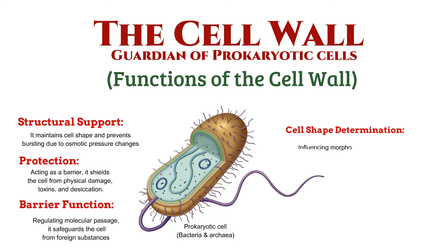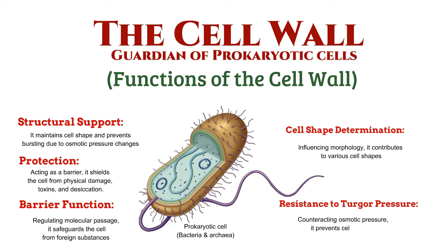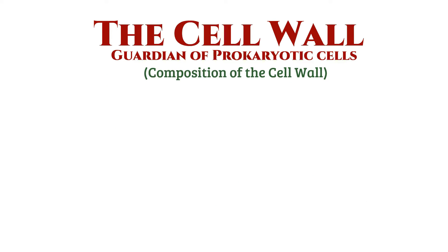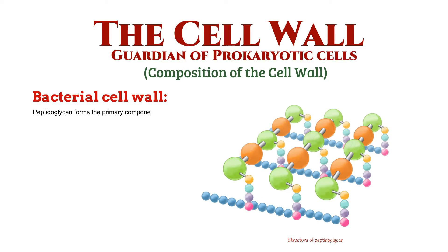Influencing morphology, the cell wall contributes to various cell shapes. Counteracting osmotic pressure, it prevents cell bursting. The composition of the cell wall varies among prokaryotic organisms. In bacteria, peptidoglycan forms the primary component, imparting strength and rigidity.